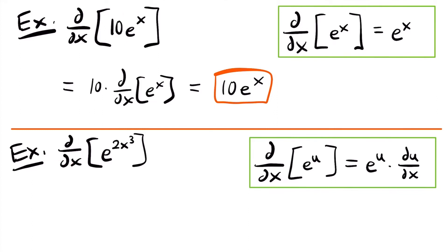Next, let's look at the derivative of e to the power of 2x cubed. How are we going to find this derivative? We're going to need to use the chain rule version of this derivative rule, where we have e to the power of u where u is a function of x. The derivative of e to the power of u is equal to e to the power of u times the derivative of u with respect to x. So our function u would be 2x cubed, and the derivative here would start with e to the power of 2x cubed.